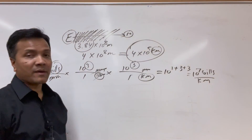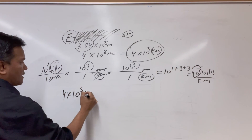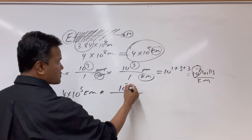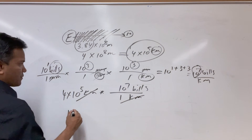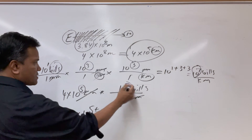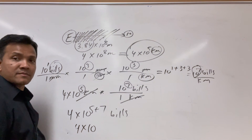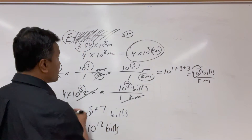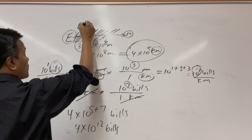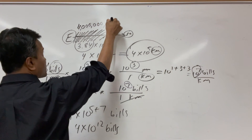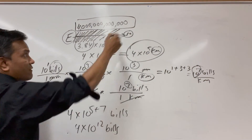Converting: 10 bills per millimeter × 10³ mm/meter × 10³ meters/kilometer = 10⁷ bills per kilometer. The Moon is 4×10⁵ kilometers away, so: 4×10⁵ km × 10⁷ bills/km = 4×10¹² bills. I would need 4 trillion dollar bills stacked on top of each other to reach the Moon.